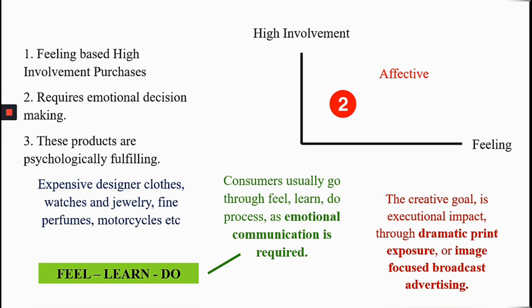Consumers here follow a feel-first sequence — they go through the feeling of the product first, then learn about it, and then purchase. Emotional communication is therefore required. The creative goal for advertising in this quadrant is executional impact through dramatic print exposure or image-focused broadcast advertising — for example, jewelry advertisements in newspapers where a celebrity is portrayed in a very prominent, large image.